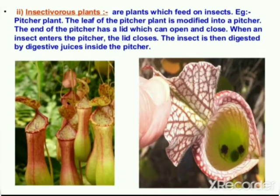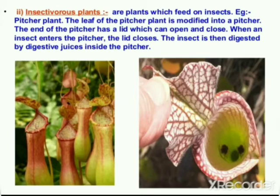The next category is insectivorous plants, which are plants that feed on insects. An example is the pitcher plant. The leaf of the pitcher plant is modified into a pitcher. The end of the pitcher has a lid which can open and close. When an insect enters the pitcher, the lid closes and the insect is digested by digestive juices inside, as shown in the diagram.